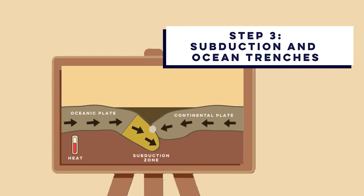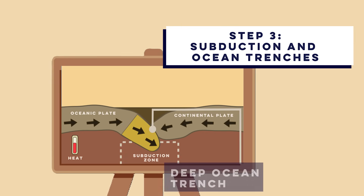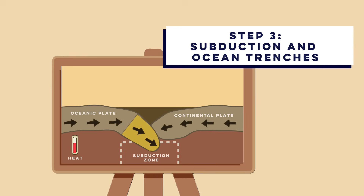As the oceanic plate sinks, it forms a deep ocean trench at the point of subduction. This trench marks where the crust is being pulled down into the mantle and being destroyed by the heat and pressure. A famous example of this is the Peru-Chile Trench along the west coast of South America.